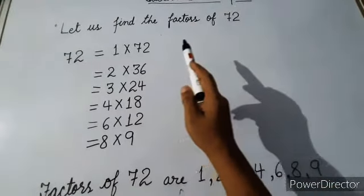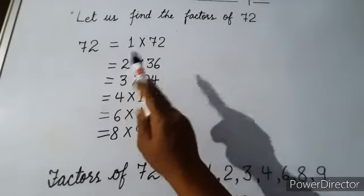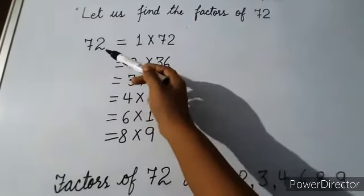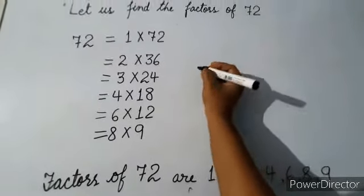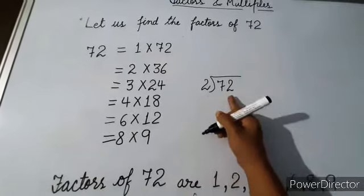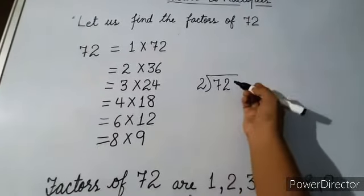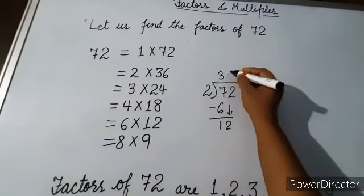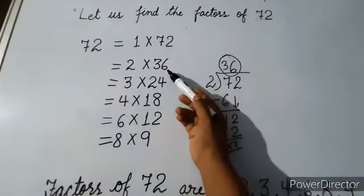Now finding the factors of seventy-two. Always start from one: one times seventy-two. Then two — seventy-two is an even number so it appears in two's table. Two times thirty-six is seventy-two. You can divide to check: if you don't know how many times seventy-two appears in the table of two, divide seventy-two by two to get thirty-six.